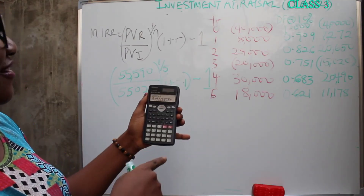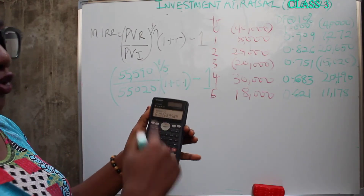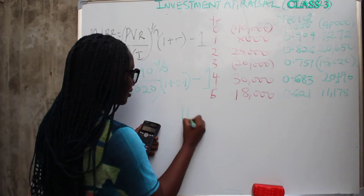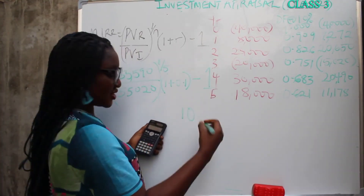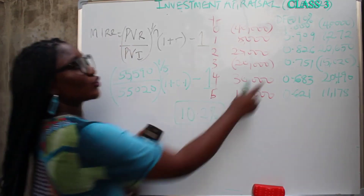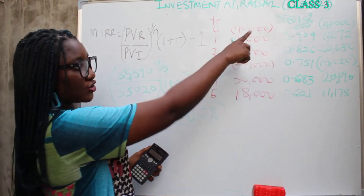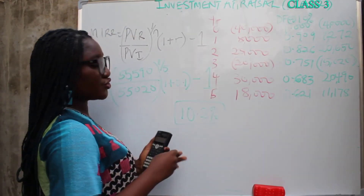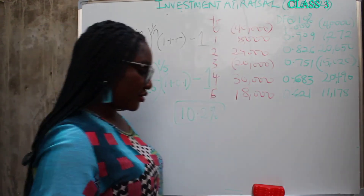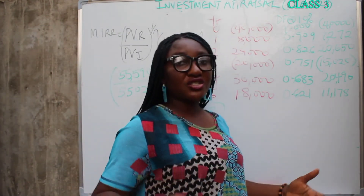Your MIRR is 0.102, which is 10.2%. As you can see, it's close to your cost of capital. The project is acceptable because it's more than your cost of capital — MIRR is greater than cost of capital, so you accept the project.